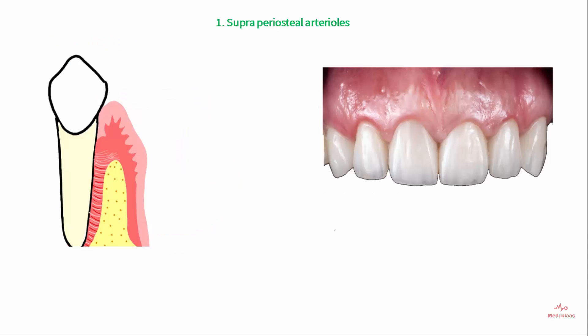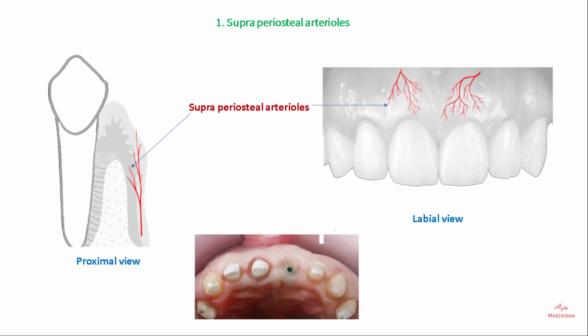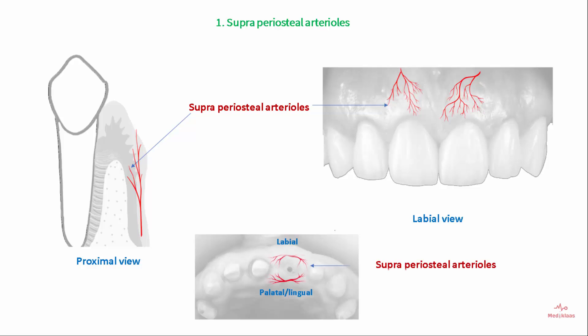The supraperiosteal arterioles run along the facial and the lingual surfaces of the alveolar bone and branch out into capillaries that supply different parts of the gingiva. These capillaries extend along the sulcular epithelium and also reach areas between the rete pegs of the gingiva.